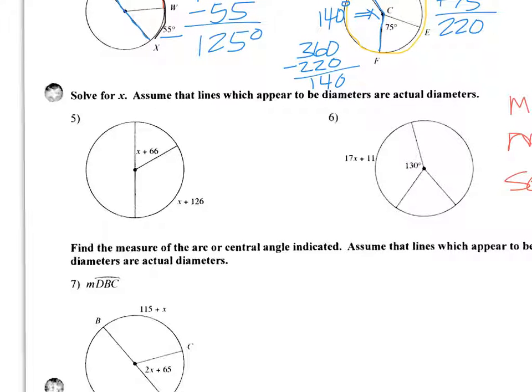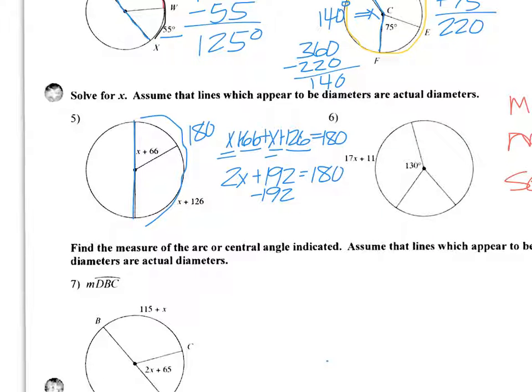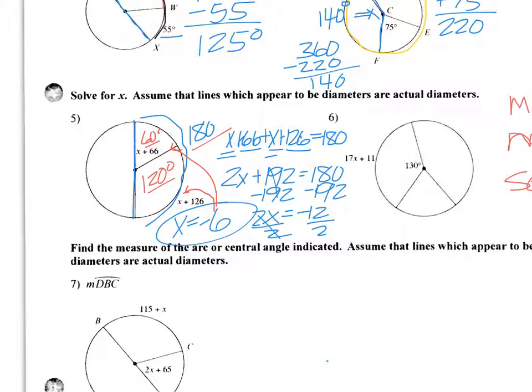It says solve for X. Assume that the lines which appear to be diameters are actually diameters. So this is a diameter. So all this is 180. So what do we do? We set up our equation. X plus 66 plus X plus 126 has to equal 180. So 66 and 126, that's 192. X plus X would be 2X. So 2X plus 192 equals 180. Subtract 192. So 2X is negative 12 divided by 2. And we get X is negative 6. Now a good thing to do is plug in. If I put negative 6 in here, that's going to make this 60. If I put negative 6 in right here, that's going to make that 120. What's 120 and 60? 180. So that works.